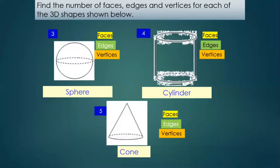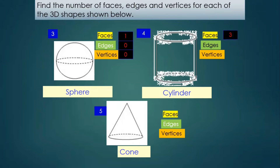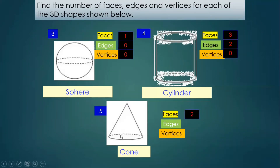Let's move on. You can see a sphere, a cylinder, and a cone. Find the number of faces, edges, and vertices for each. For a sphere, the number of faces is one curved face, edges zero, vertices zero — no corner. For a cylinder, the faces are three: one curved face and two flat circular faces. Edges are two — the two curved edges at the top and the bottom — and zero vertices. For a cone, the faces are two: one curved face and one flat face. The edge is only one, the curved edge, and vertices — the corner — is one.